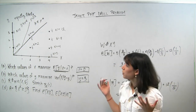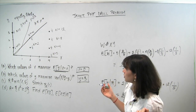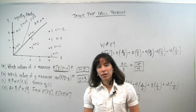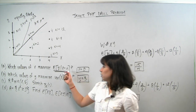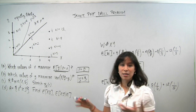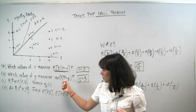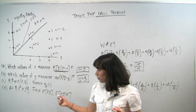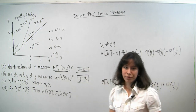We have now finished the problem, having computed both the unconditional and conditional expectations. The key takeaways are: getting comfortable computing things involving joint PMFs, finding expectations quickly by thinking about center of mass and the geometry of the problem, practice computing conditional variances, and working with derived distributions. We'll do a lot more of those later.